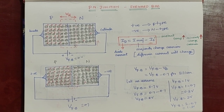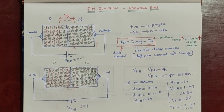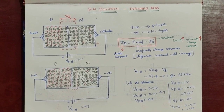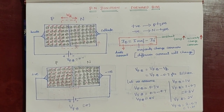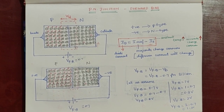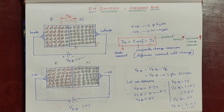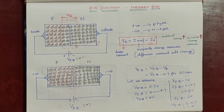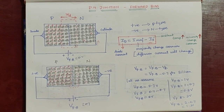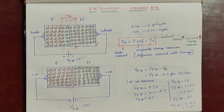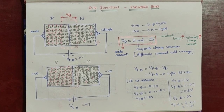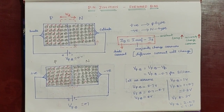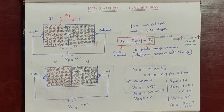In the previous video, we covered PN Junction at No Bias Condition, Depletion Layer Formation, and PN Junction Diode. We will use the same built-in voltage. If you want to see that video, you can refer to it.